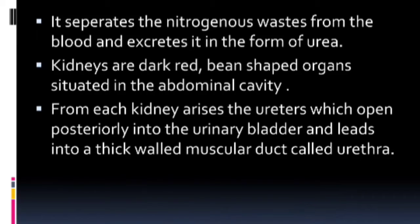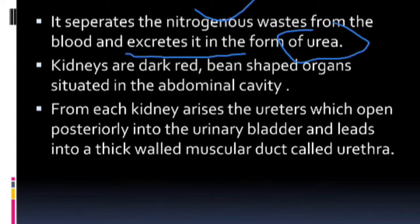These are the three types of animals based on their excretory product. Now I am going to teach the excretory system of rabbit. The nephrons separate the nitrogenous waste from the blood and excrete it in the form of urea. The excretory product of rabbit is urea.